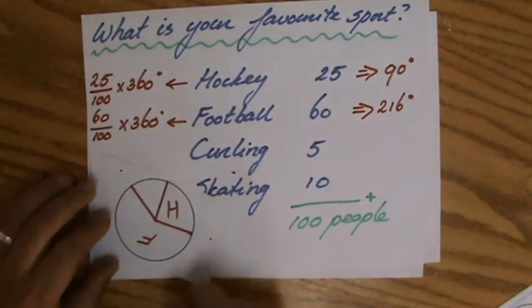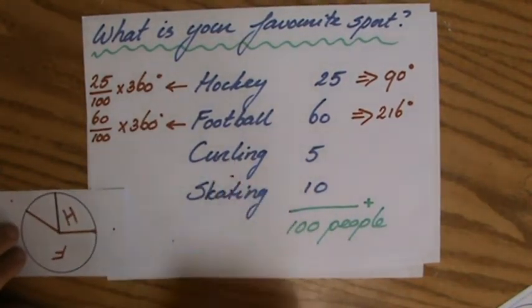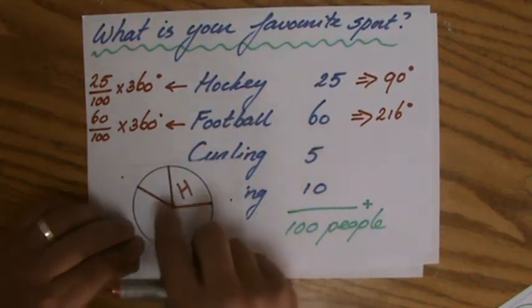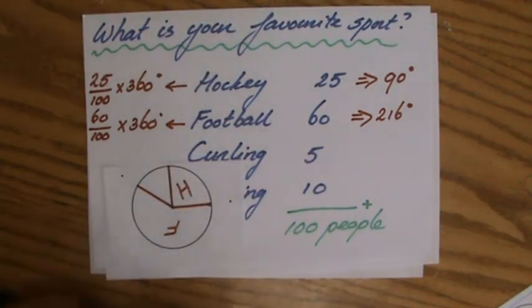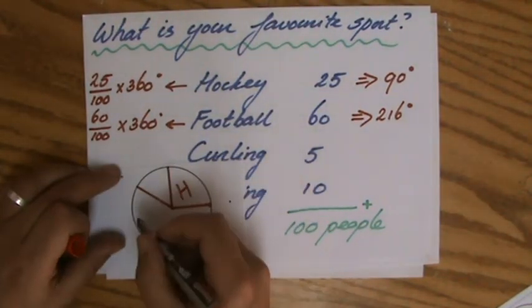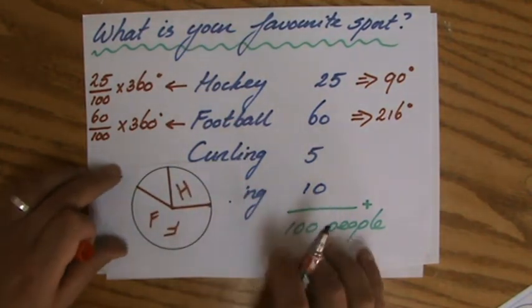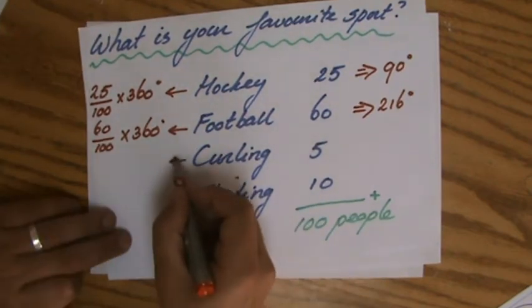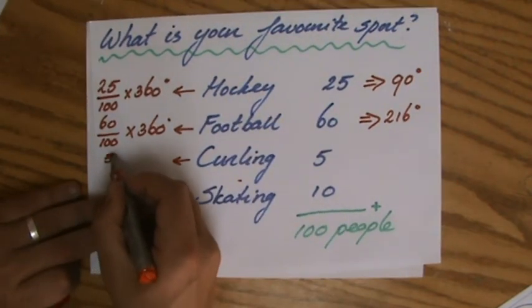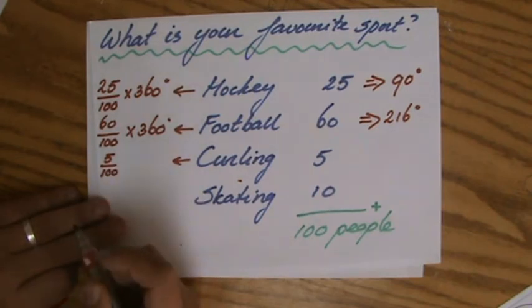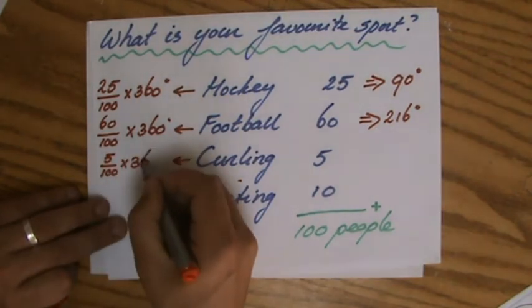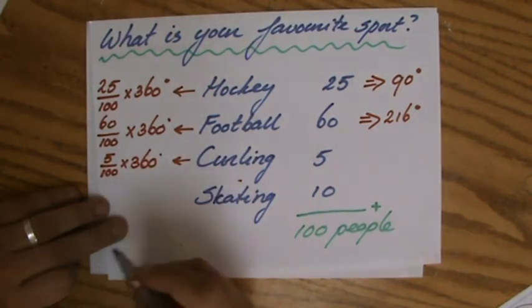I only have a small chunk left and I have to divide that over curling and skating. How much will they each get? Curling—5 people like that. 5 out of 100 people times 360 degrees, and you're going to get 18 degrees.